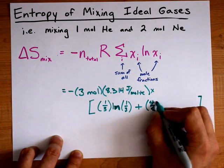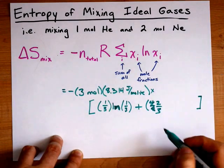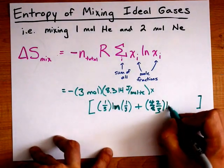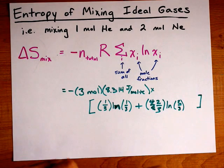sum with two thirds. Because two thirds of the atoms are neon times the ln of two thirds. Cool?